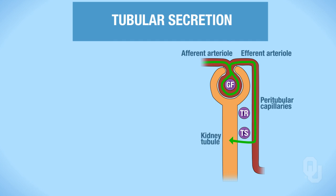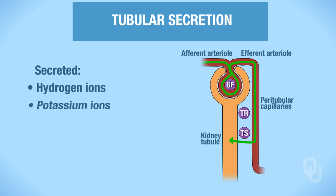So what gets secreted? Hydrogen ions are going to get secreted—we already talked about their secretion in the proximal tubule, and now we're going to talk about their secretion in the distal and collecting tubules as well. Potassium ions are also going to be secreted, and this is controlled by aldosterone. And then we have some organic anions and cations as well.